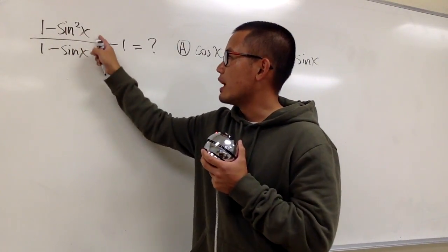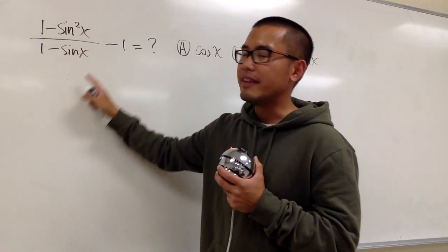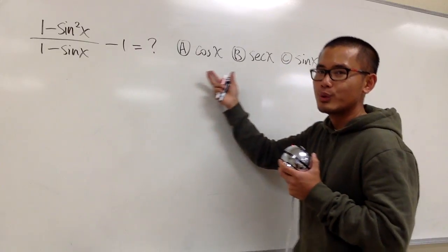For this question, we have 1 minus sine squared x over 1 minus sine x, and then minus 1 is equal to which of this right here, right?